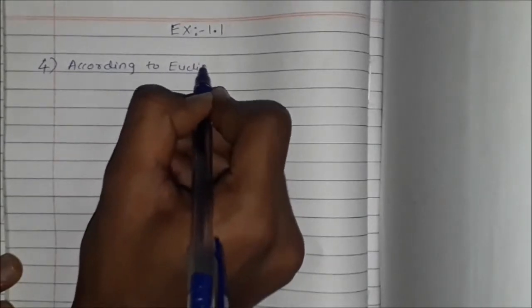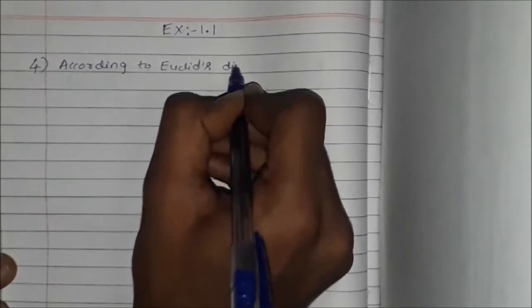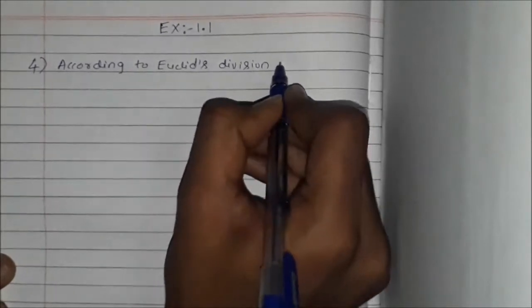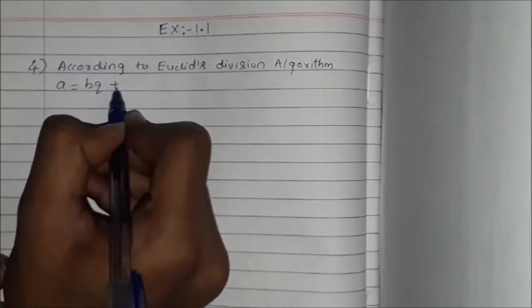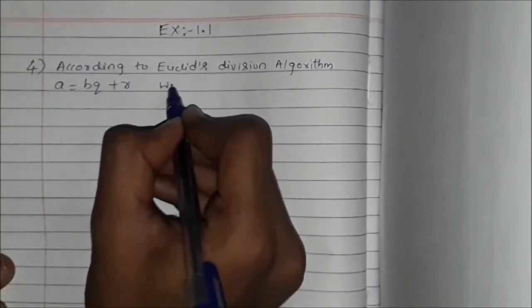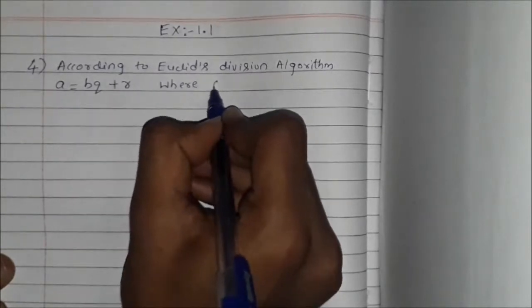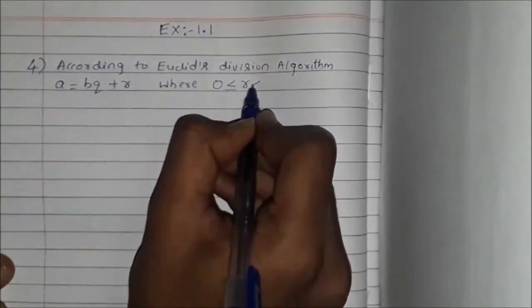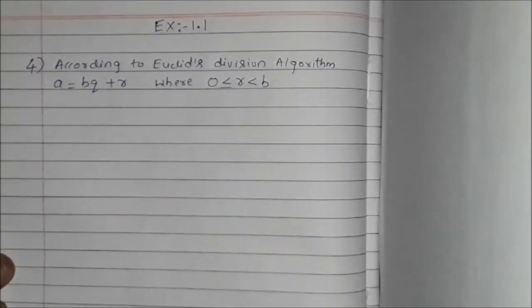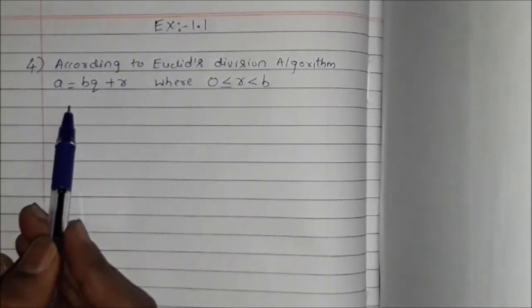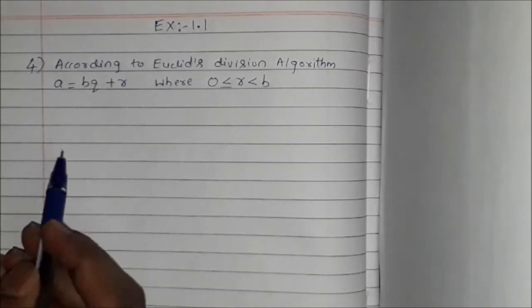According to Euclidean's division algorithm, A is equal to BQ plus R, where the condition is 0 is less than or equal to R, and R is less than B. By using this algorithm, we will prove the result.